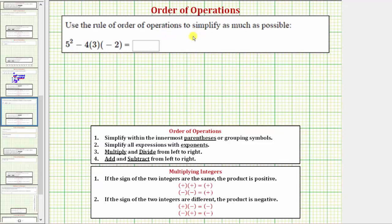We want to use the order of operations to simplify the expression. The directions may also say evaluate the expression. The given expression is 5² or the square of 5 minus 4 times 3 times negative 2.